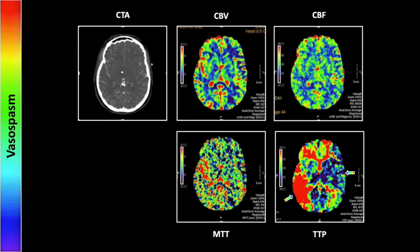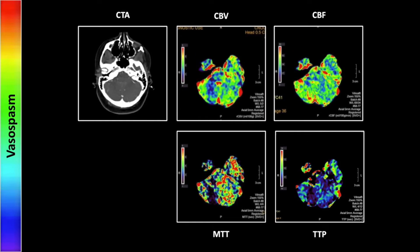Next let's look at this case of vasospasm. There's very little abnormality in the top row — the CBV and CBF, perhaps a little asymmetry in the CBV. The MTT, as we've come to see, is not always that reliable from a sensitivity standpoint. It's the TTP that really tells the story here. There are regions of markedly increased time to peak and markedly decreased time to peak — a striking regional heterogeneity that really has the appearance one would expect from vasospasm.